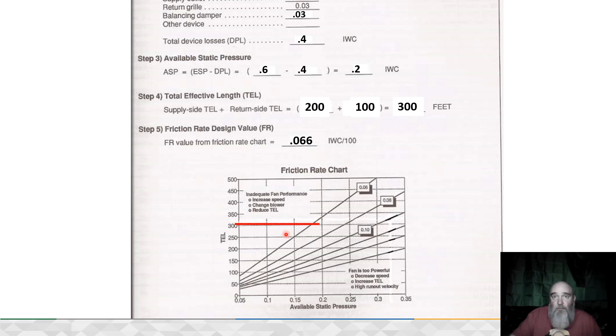We populate the friction rate worksheet with the 200 plus the 100 to solve for our TEL, which is 300 feet. Then we simply take the friction rate chart, also known as the aqua wedge, and we put in 300 feet.